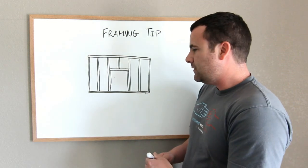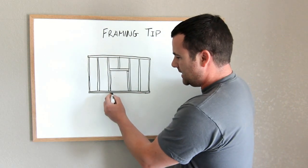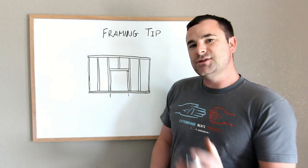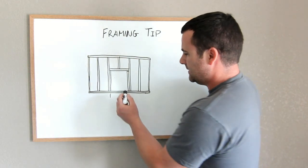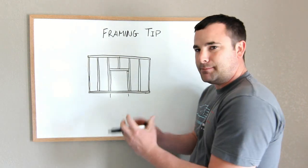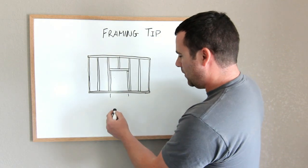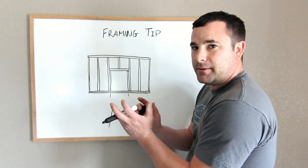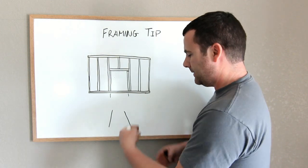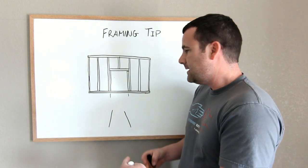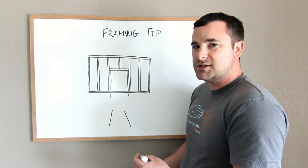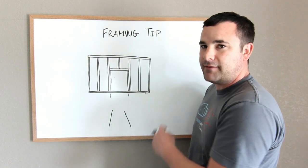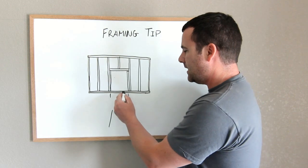Because if you cut this out right here and then stood your wall and tried to place it, there's a good chance that the opening at the bottom could go wider, it could spread like that, it could narrow up. Your bottom can twist if it's not perfectly on your chalk line, it'll twist out of shape. It's just better to stand your wall, fasten it down, and after everything's set, cut your bottom plates out of all your door openings.